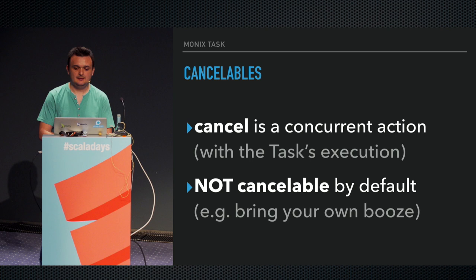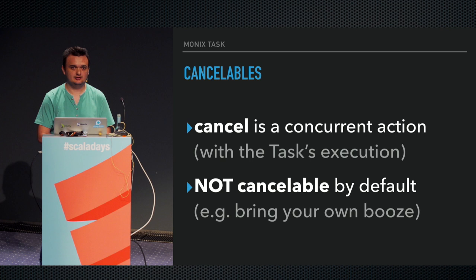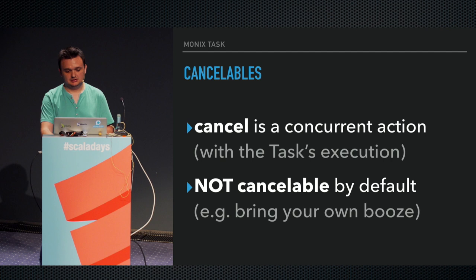The thing with cancel is that it's a concurrent operation with the task's execution, which can create problems — which is why nothing is cancelable by default. ScalaZ task implementation has canceling but it's problematic. The implementation in Monix is really robust. If there is a correct cancelable implementation, Monix's implementation is it.